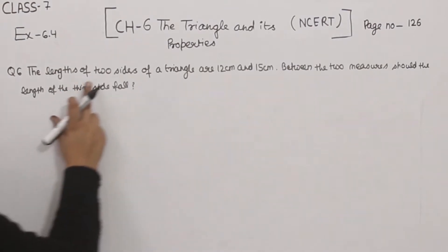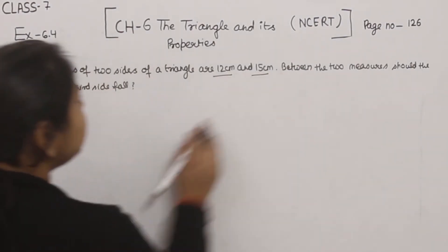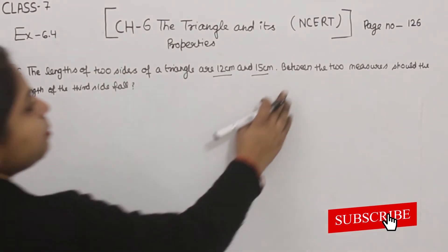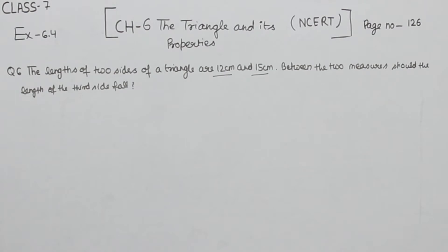Question number 6 says the length of the two sides of a triangle are 12 centimeter and 15 centimeter. Two sides are given, between the two measures should the length of the third side fall. So we have to tell what should be the length of the third side.